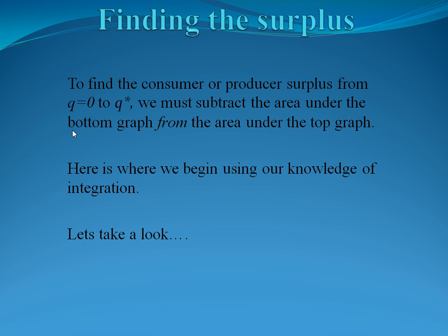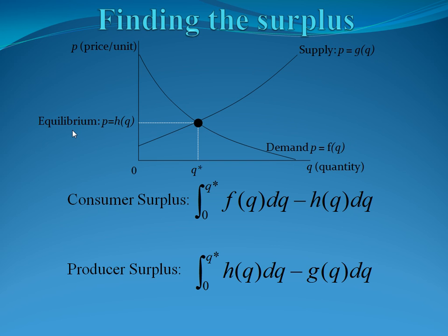How do we find these surpluses? So in order to find the consumer and producer surplus going from 0 to Q star, the equilibrium quantity, we want to subtract the area under the bottom graph from the area under the top graph. This goes back to finding the area between two curves. We always do top minus bottom when we integrate. Here's where we can apply our knowledge of integration. Let's see how we do that. Let's label all our graphs so we're on the same page.